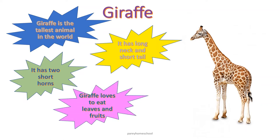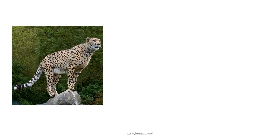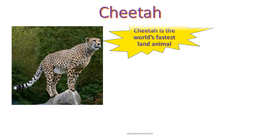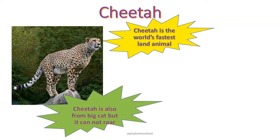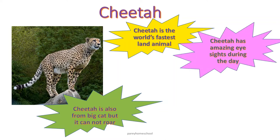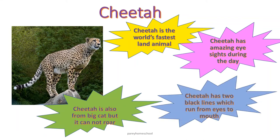Giraffe loves to eat leaves and fruits. This is cheetah. Cheetah is the world's fastest land animal. Cheetah is also from the big cat family, but it cannot roar like lion and tiger do. Cheetah has amazing eyesight during the day. Cheetah has two black lines which run from eyes to mouth, and this is how it differentiates from other animals.